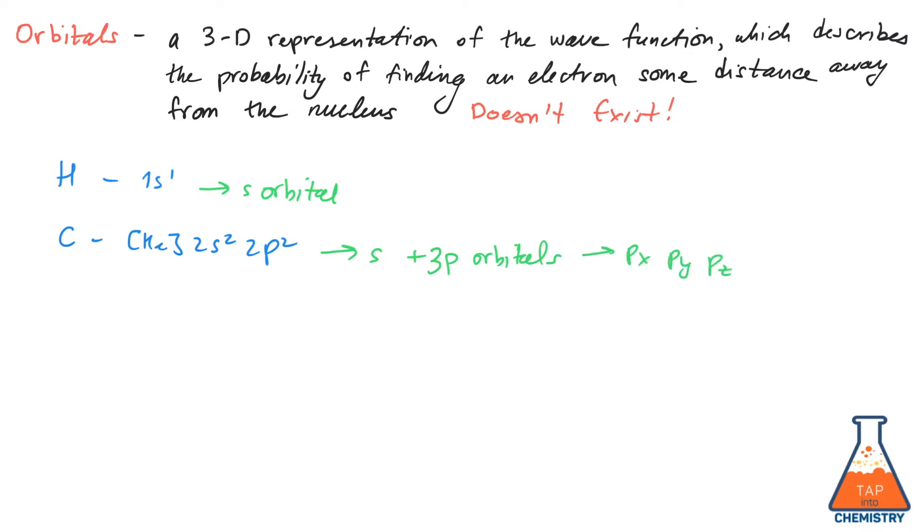We know that atoms don't just exist by themselves. They bond one another to form molecules. When atoms bond to form molecules, their atomic orbitals mix to form molecular orbitals. Atoms can form single, double, triple, quadruple, and even quintuple bonds. But the atoms we are going to be dealing with in the s and p orbitals can form up to three bonds at most.